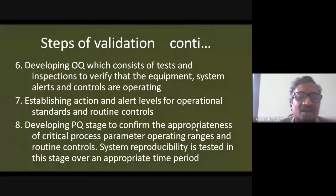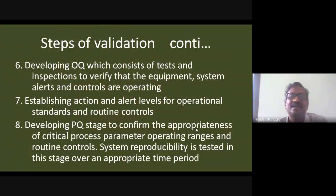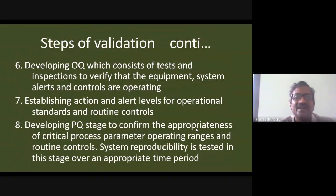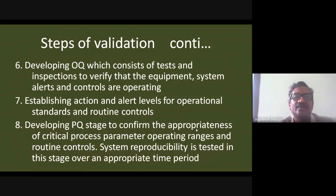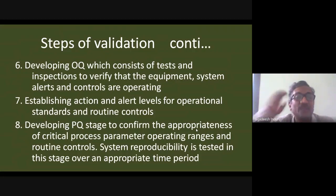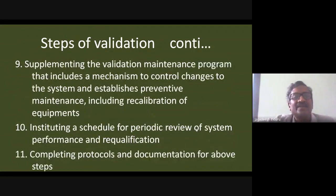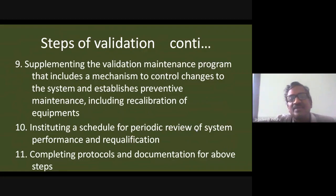After establishing operating ranges in OQ and PQ, you establish action and alert levels — thresholds within the operational standard. For example, when drying tablet granules, if the moisture content limit is 0.5–1.5%, an alert is triggered if values approach the boundary, and action is taken beyond the limit, such as changing the fan. The PQ stage confirms appropriateness, and the validation maintenance program includes preventive maintenance and recalibration.